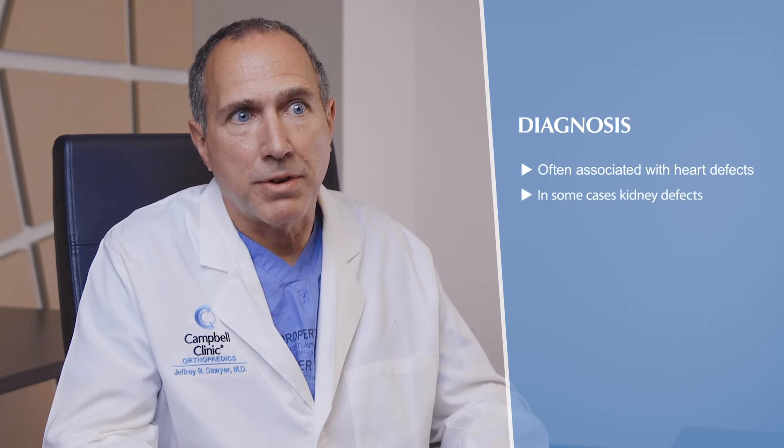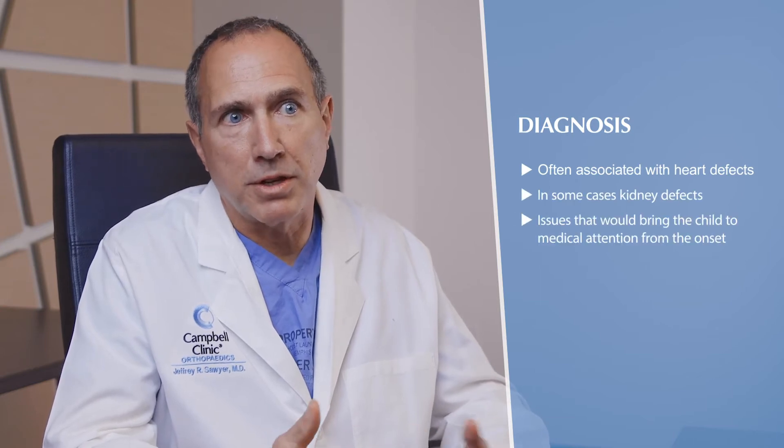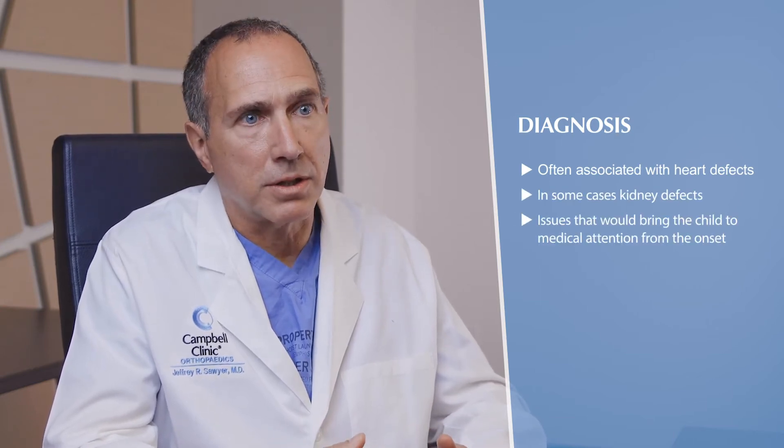Within early onset scoliosis there's a tremendous spectrum of patients. Some children are born with multiple developmental problems right from birth, and that's a fairly straightforward diagnosis to make. Oftentimes these are associated with heart defects or kidney defects — things that would bring the child to medical attention. Other times it's relatively subtle, and some of these things don't become apparent until a child starts to sit up at six months of age or begin walking at the age of one.